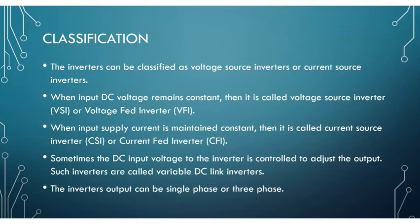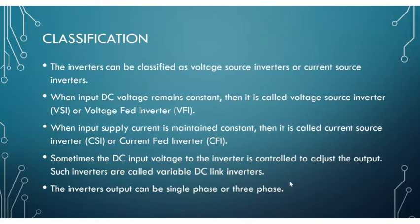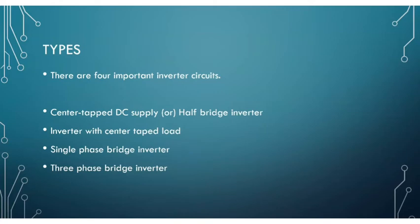Sometimes the DC input voltage to the inverter is controlled to adjust the output — such inverters are called variable DC link inverters, where a variable DC input is given. The inverter output may be single phase or three phase, which we will study later by discussing single phase and three phase inverters in separate videos.